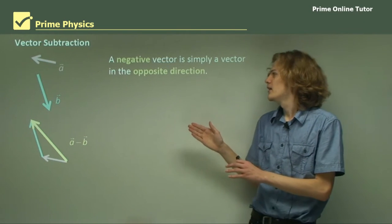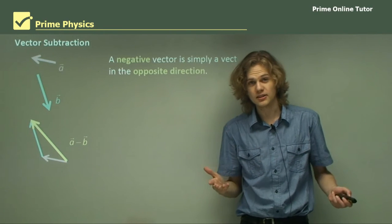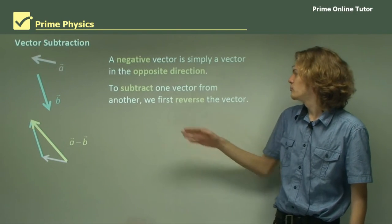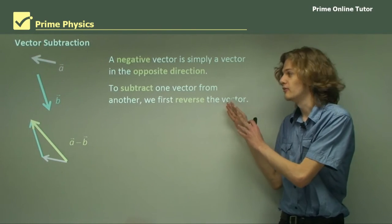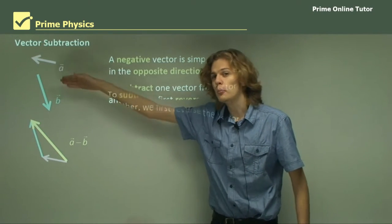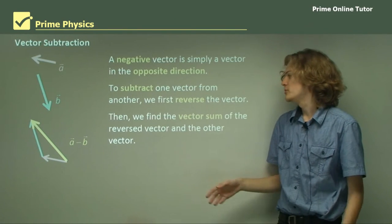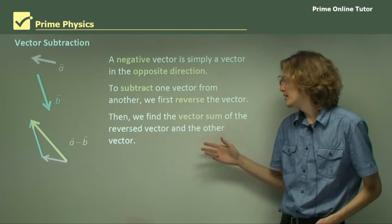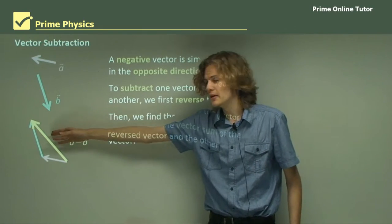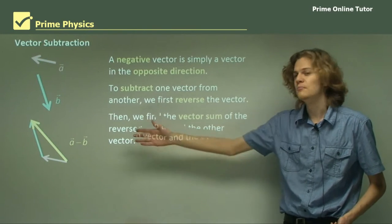A negative vector is simply a vector in the opposite direction, and we can use this to find the result of a vector subtraction. If we want to subtract B from A, we must first reverse the vector that we're subtracting. So we reverse B, making it point in the opposite direction — upward instead of downward. Then we find the vector sum of minus B and A. We join minus B to the head of A and get the vector sum of A and minus B, which is A minus B.